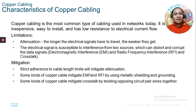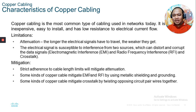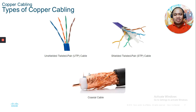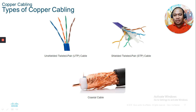Strict adherence to cable length limits will mitigate attenuation — do not exceed 100 meters. Electrical signals are susceptible to interference from two sources: electromagnetic interference (EMI) and radio frequency interference (RFI), which can distort and corrupt data signals. Some copper cabling mitigates EMI and RFI by using metallic shielding and grounding — the shielded twisted pair. Some copper cables also mitigate crosstalk by twisting opposing circuit pair wires together.